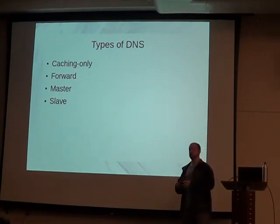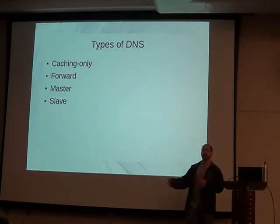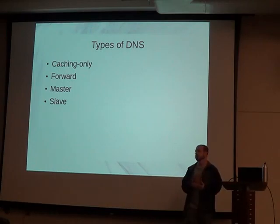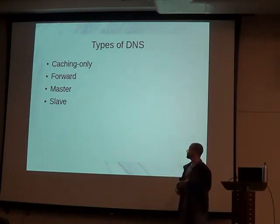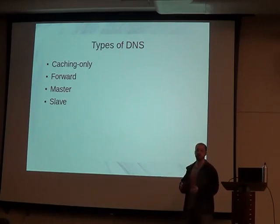When you look up google.com, it will go out to the internet, find out the IP address for google.com, and store it locally for a set amount of time. So the next person that comes looking for it doesn't require a trip to the internet. A forwarding server just forwards every request to another DNS server — it doesn't do anything itself, it just passes the request to someone else who will have the answer.